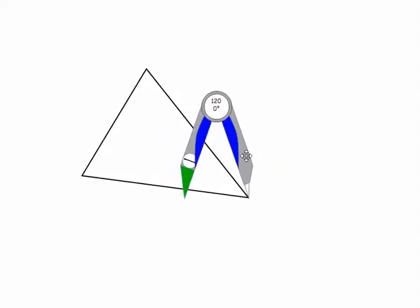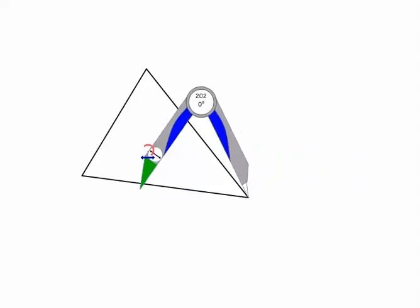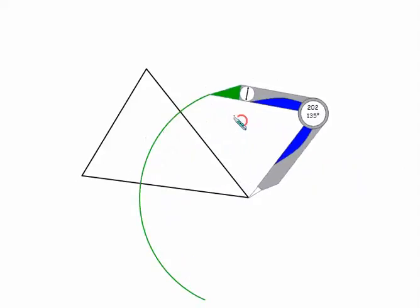So we'll start with the bottom side. Point of the compass goes at one of the vertices, open more than halfway, and I'm going to make that arc like so.